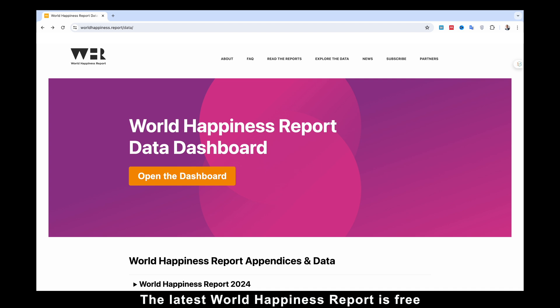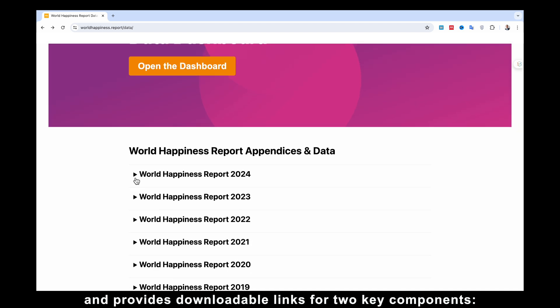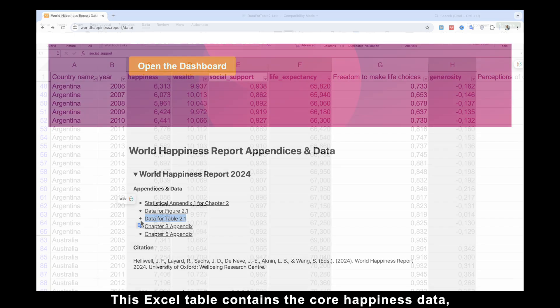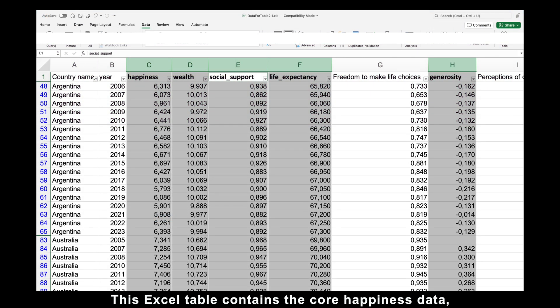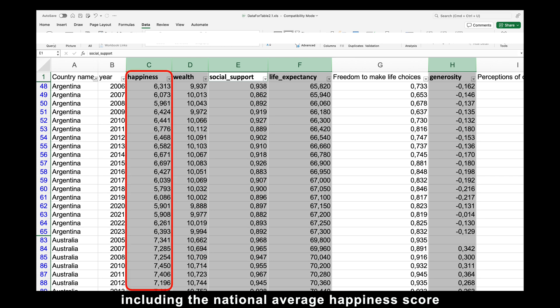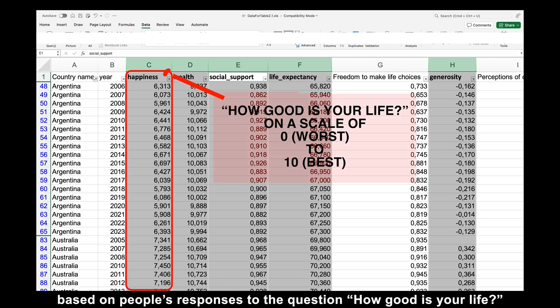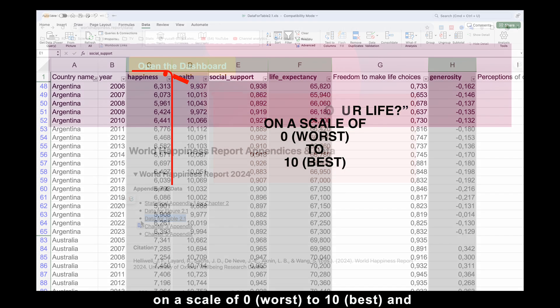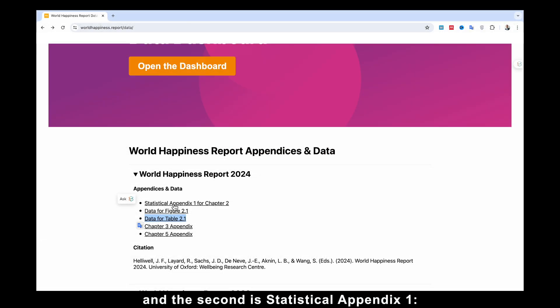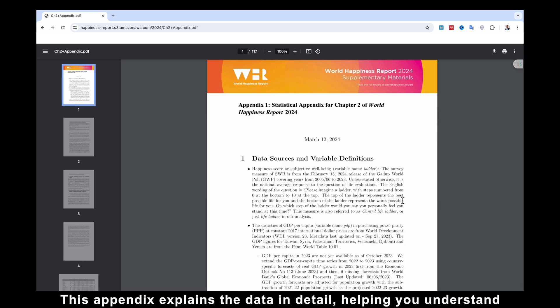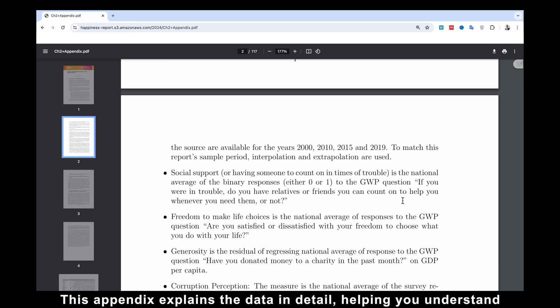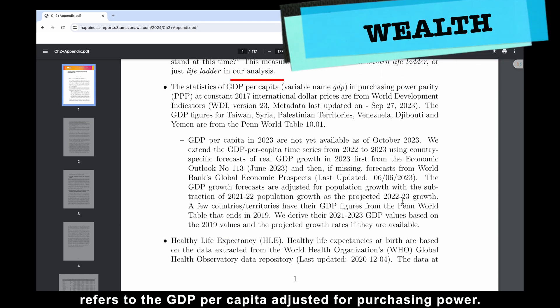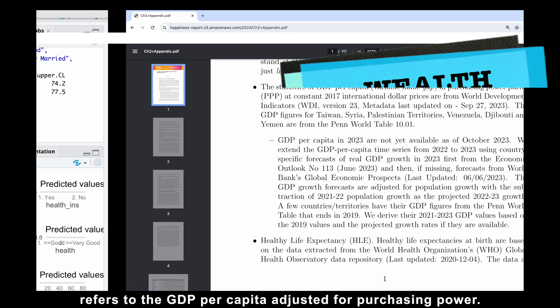The latest World Happiness Report is free and provides downloadable links for two key components. The first one is data for table 2.1. This Excel table contains the core happiness data, including the national average happiness score based on people's responses to the question how good is your life? On a scale of 0, worst to 10, best. And the second is Statistical Appendix 1. This appendix explains the data in details, helping you understand what each metric represents. For example, wealth refers to the GDP per capita adjusted for purchasing power.